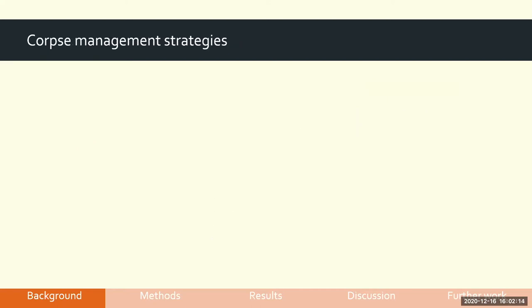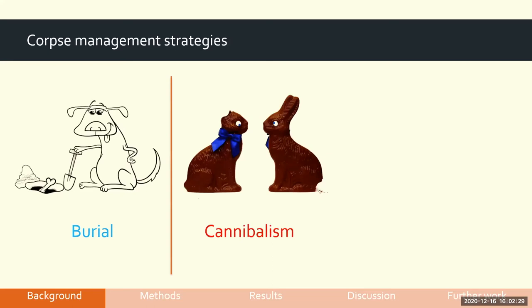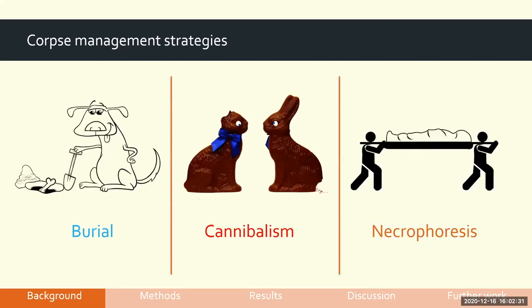Animals have generally developed corpse management strategies. Ignoring cremation, you can group these into three major categories: burial, cannibalism, and necrophoresis. Necrophoresis is where you pick up the corpse and carry it away from the society so it can no longer interact with living members — it's away and therefore out of mind, dealt with.